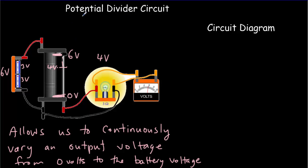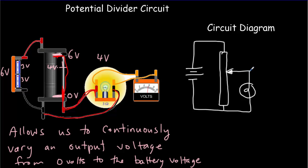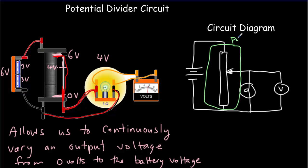Let's draw the circuit diagram for our potential divider circuit. We've got our two-cell battery connected to the rheostat, which is just a resistor. For the slider, we draw an arrow. The light bulb is connected to the slider on one side and to ground on the other side. We've also got a voltmeter going across the light bulb. This symbol — a resistor box with an arrow — is our symbol for a potentiometer, and it's in your data booklet.